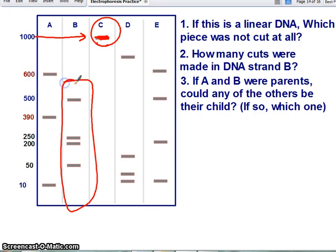How many cuts were made in DNA strand B? DNA strand B right here, we have one, two, three, four pieces. We're still assuming this is linear, so if it's linear and we get four pieces, one, two, three, three cuts would give us four pieces.